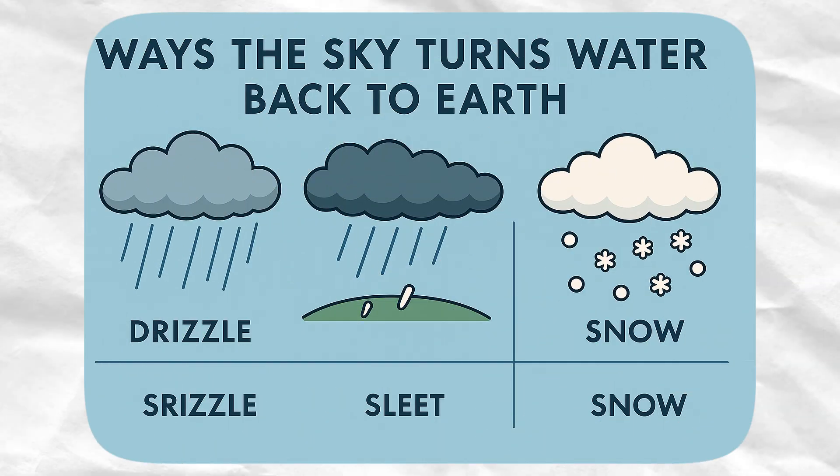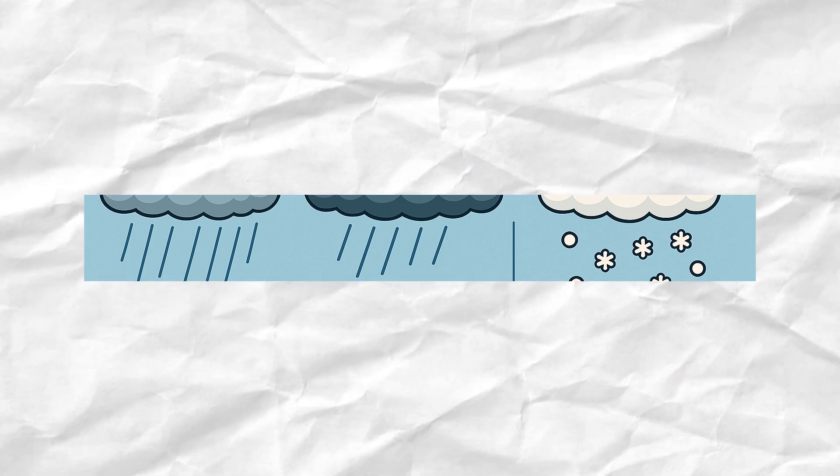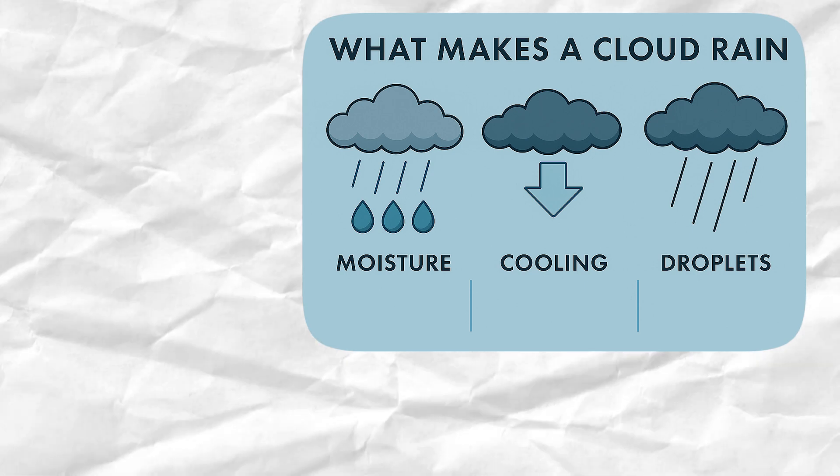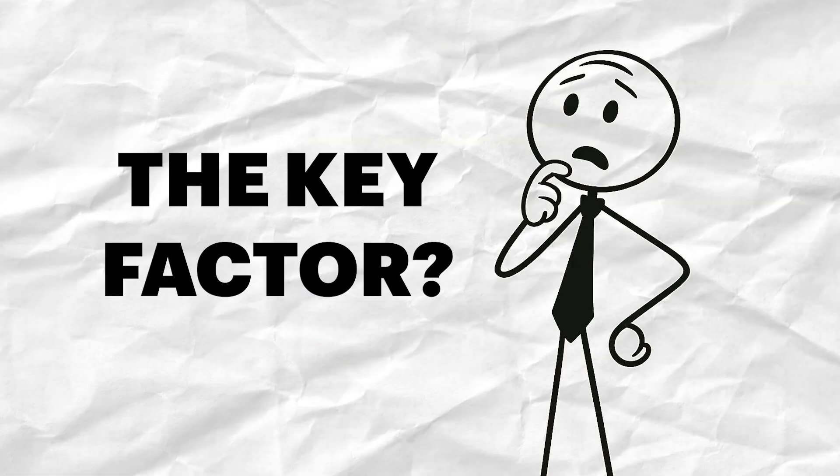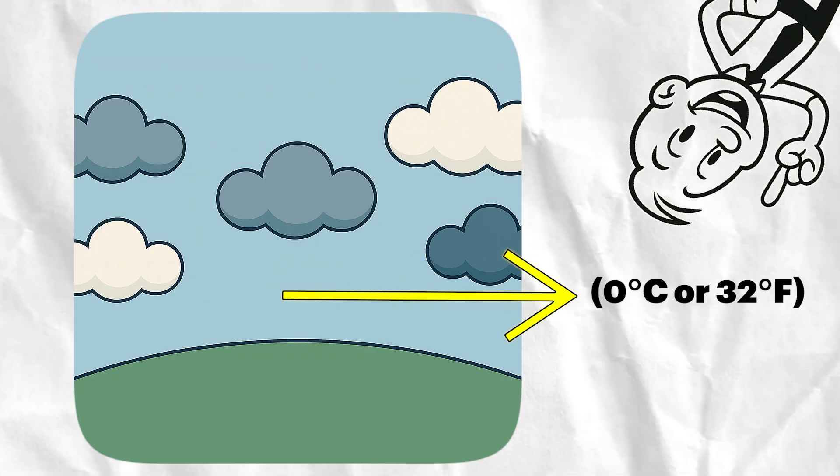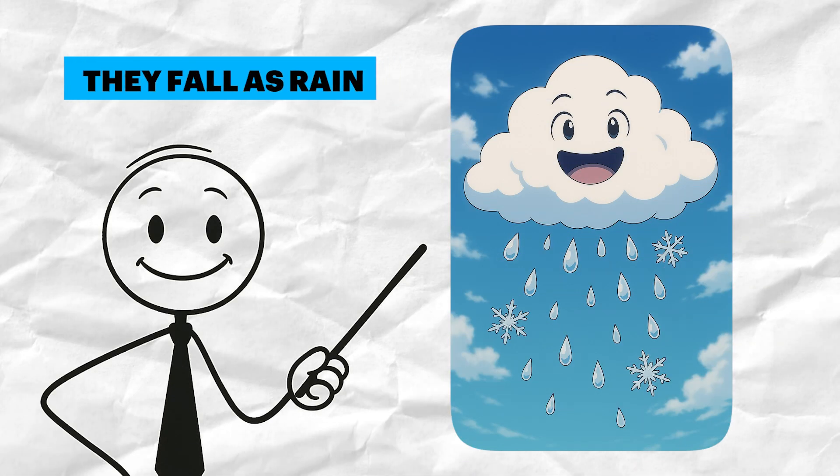And speaking of that, let's break down the various ways the sky decides to send water back to earth. Because it's not just rain. First, we have rain. Now, this one is straightforward. Water droplets that stay liquid from clouds to ground. But the key factor, temperature. If the air between the cloud and the ground stays above freezing, which is 0 degrees Celsius or 32 degrees Fahrenheit, then those droplets won't freeze.